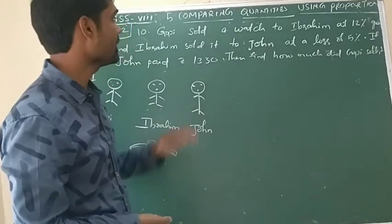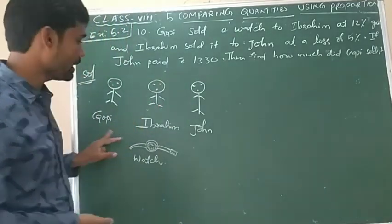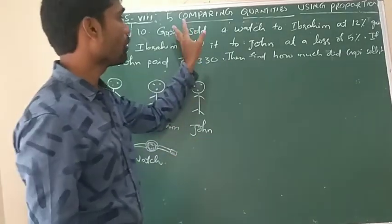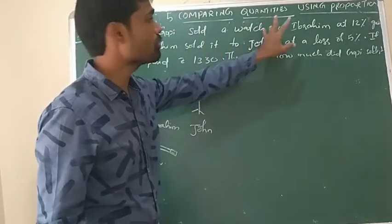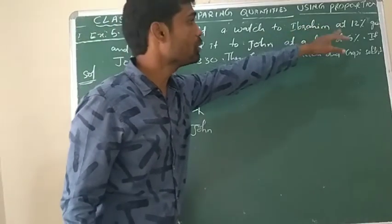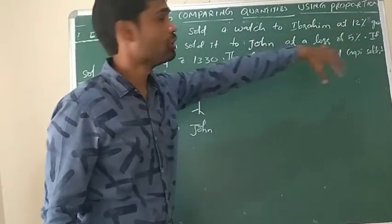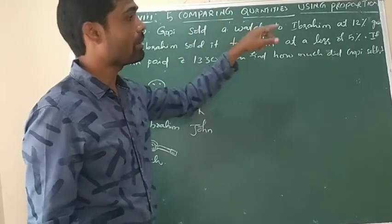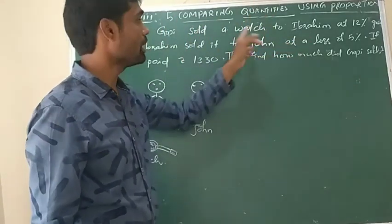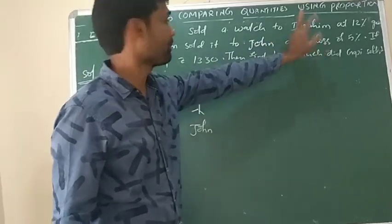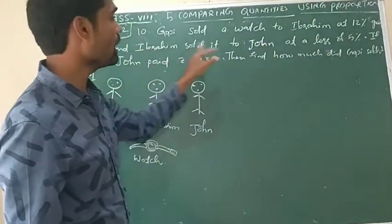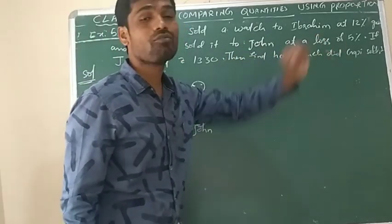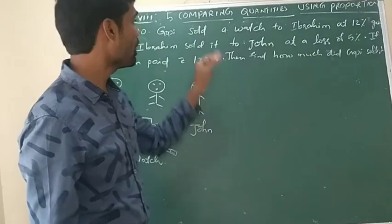10th problem. There are three persons: Gopi, Ibrahim, and John. Gopi sold a watch to Ibrahim and gave a 12% profit — so whatever Gopi purchased, he got 12% profit and sold it to Ibrahim. Now Ibrahim sold it to John at a loss of 5%. So who got the profit here?